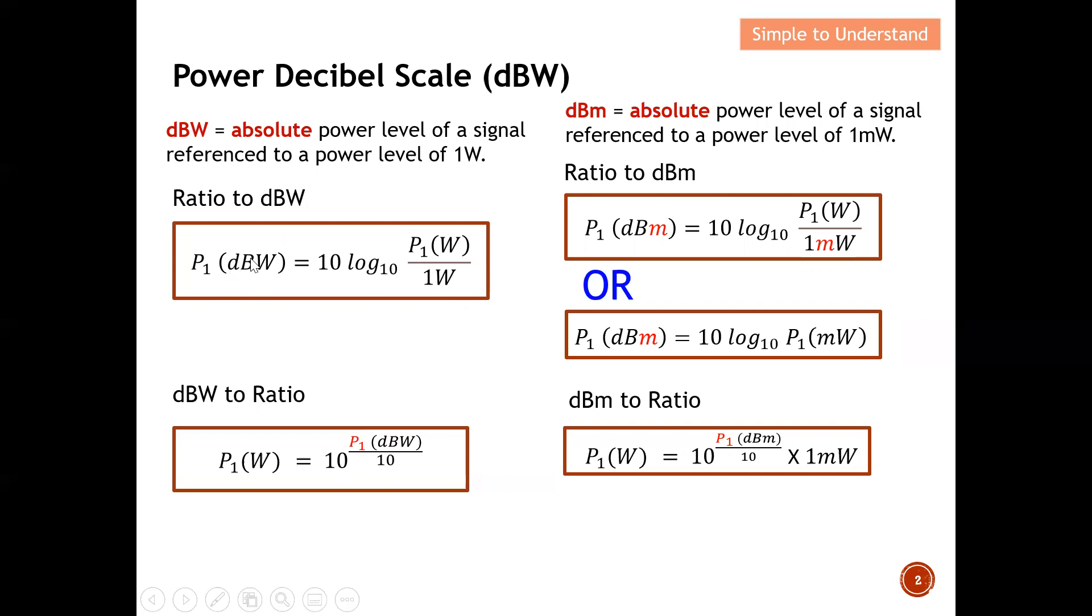If this P1W is less than 1 watt, then this P1 in terms of dBW will be a negative number. So, from here, basically, by looking whether the dBW is positive, I know that it will be more than 1 watt. If it's negative, I know that this P1W will be less than 1 watt. So, the key purpose of decibel is to give a very clear, simple comparison between two terms here. Same wise for this dBm.